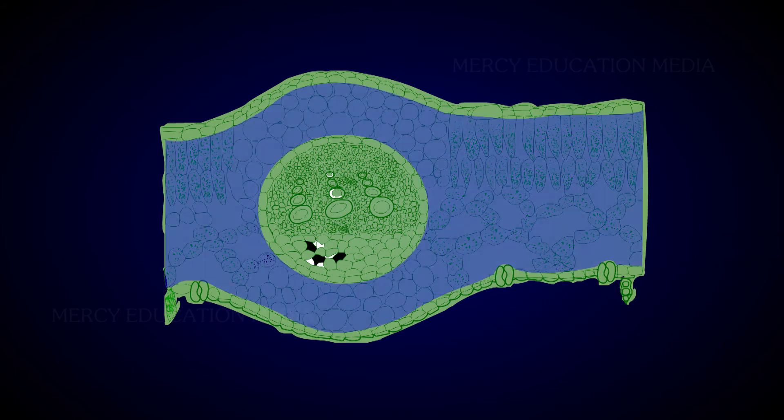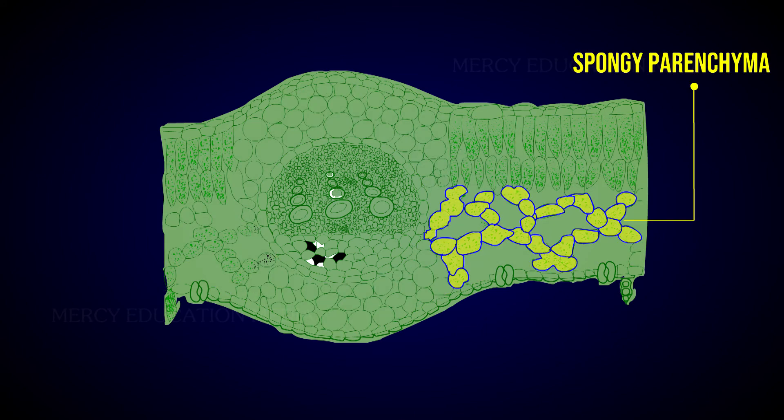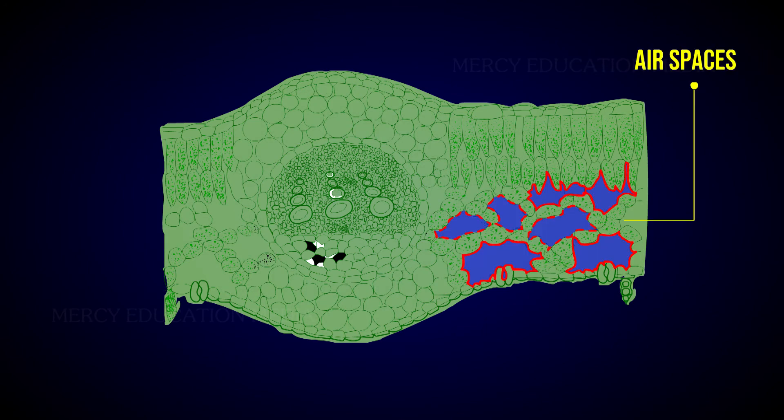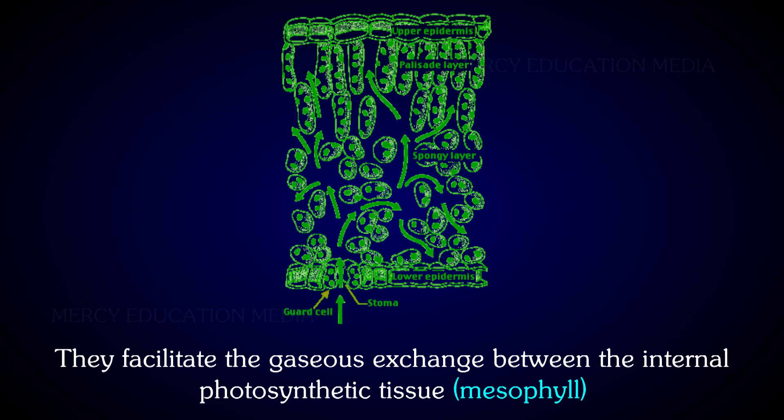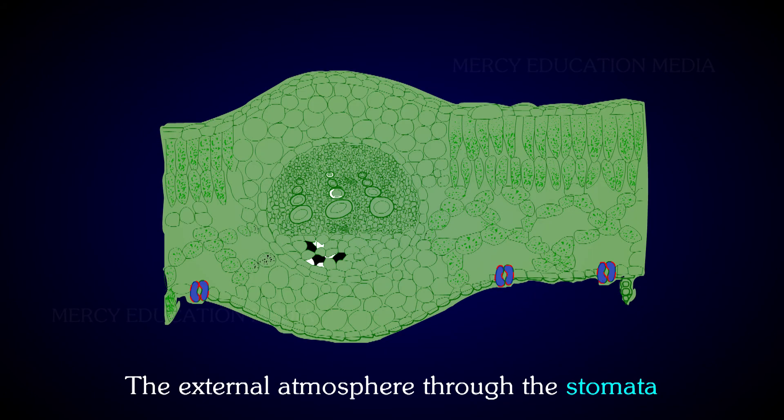The mesophyll tissue, especially spongy parenchyma cells, enclose many air spaces. The presence of air spaces is a special feature of spongy cells. They facilitate gaseous exchange between the internal photosynthetic tissue (mesophyll) and the external atmosphere through the stomata.